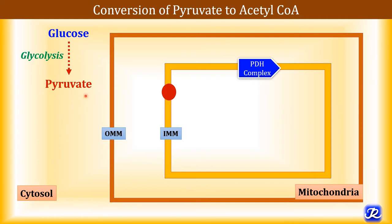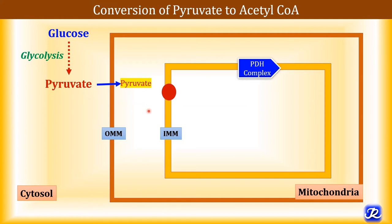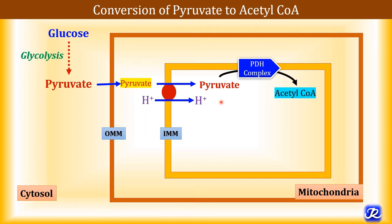Glycolysis occurs in the cytosol, and pyruvate — the end product of glycolysis — must be oxidized in the TCA cycle, which is located in the mitochondrial matrix. Pyruvate crosses the outer mitochondrial membrane freely, but to cross the inner mitochondrial membrane it requires the pyruvate transporter. Pyruvate dehydrogenase complex is located in the inner mitochondrial membrane and converts pyruvate into acetyl-CoA, which then enters the TCA cycle.